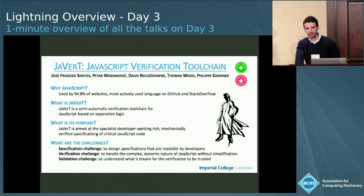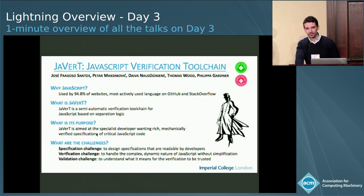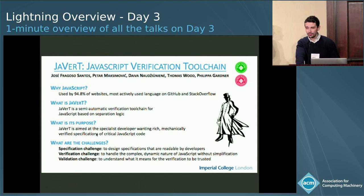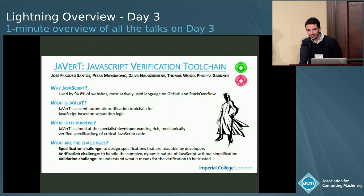I'm going to present Javert, a JavaScript verification tool chain based on separation logic. Javert targets the specialist developer wanting rich, mechanically verified specifications of critical JavaScript code. I'm going to talk about the challenges we faced in developing Javert — it needed to tackle the entire complexity of the language without making any simplifying assumption, and its specifications need to be readable by JavaScript developers. Come to the talk if you want to know more.